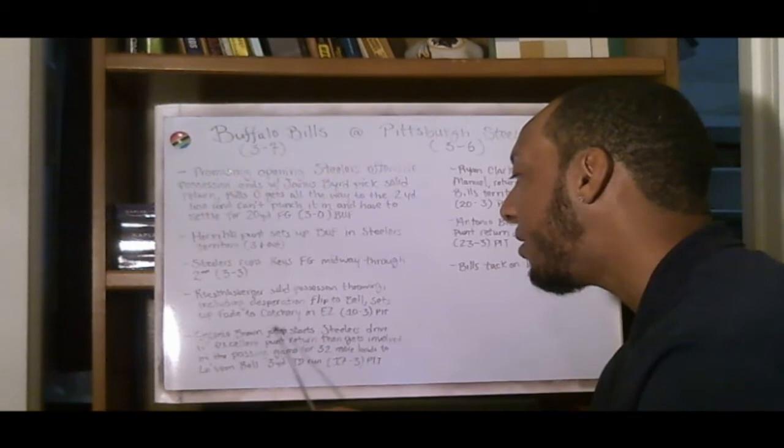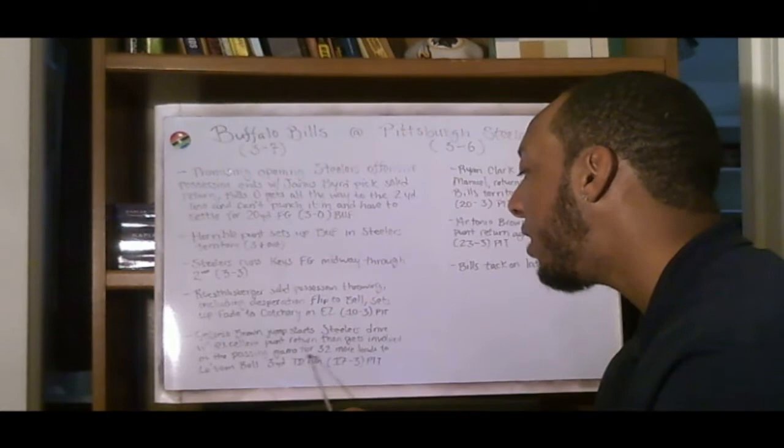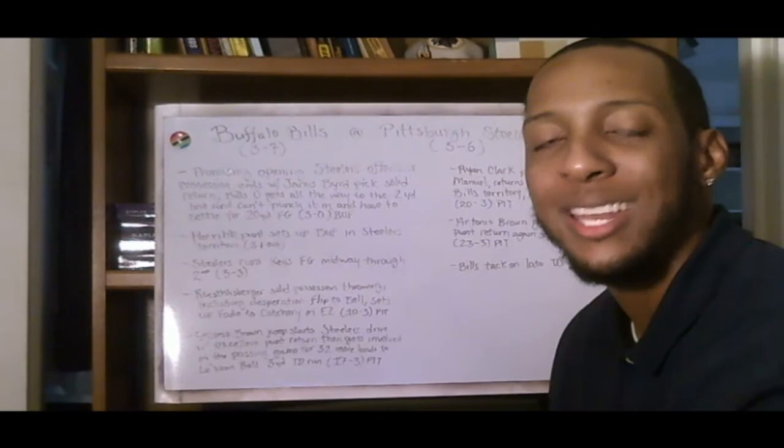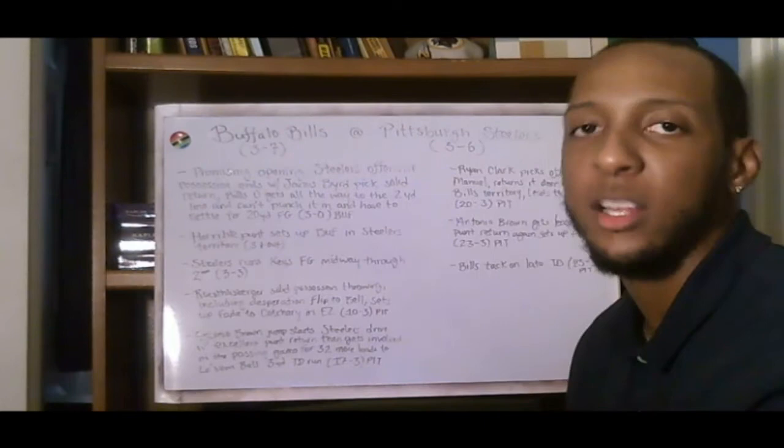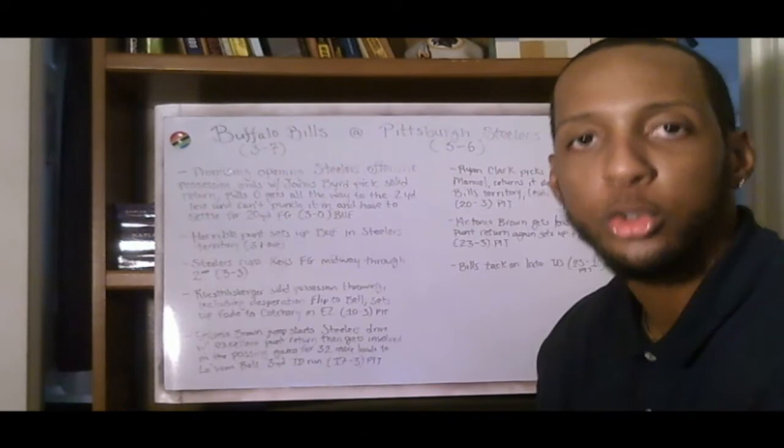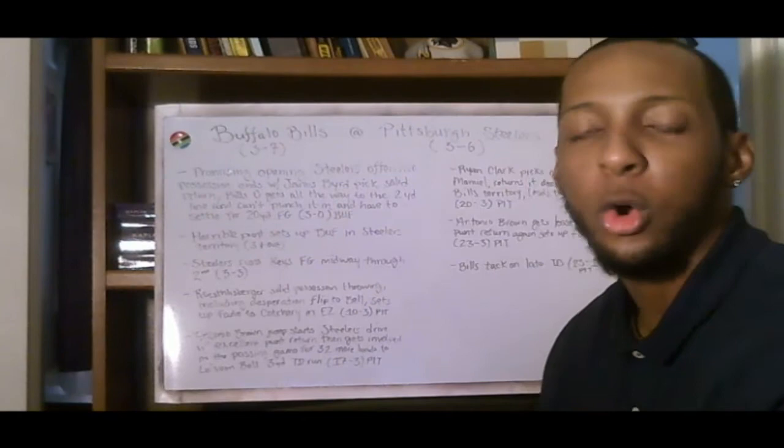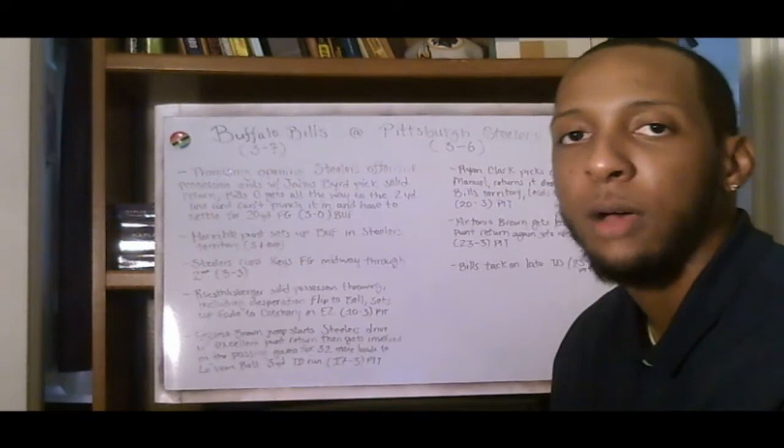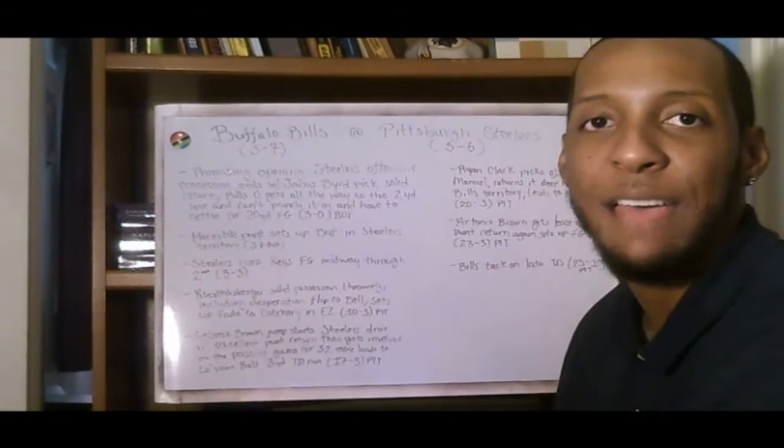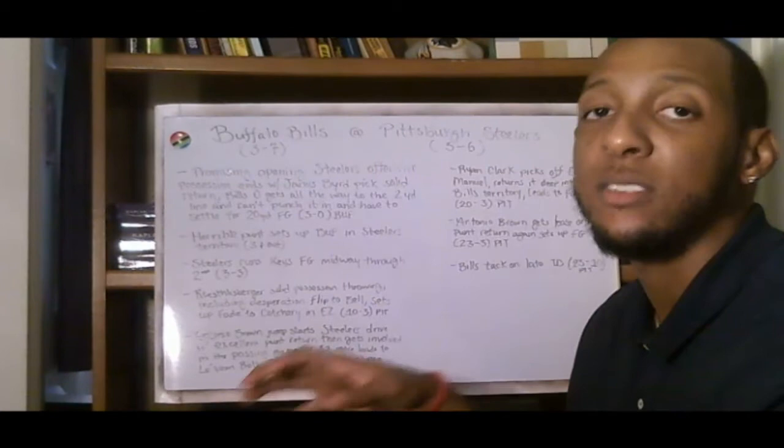Antonio Brown jump-started Steelers' drive with an excellent punt return, then gets involved in the passing game for 32 more, leads to a Le'Veon Bell 3-yard touchdown run. 17-3. At this point, the Steelers, they've won this football game. The Bills aren't going to do anything offensively, aren't going to challenge the Steelers in this game. Unless the Steelers, which they've done quite a bit this season, get in their own way, step on their own toes, shoot themselves in the foot. Unless they turn it over, they have some kind of blunder on special teams, or they give up some kind of return for a touchdown. Unless they do something of that nature, if the Bills have to drive 11 plays, 80 yards for a touchdown, they're not going to do it. The Steelers have this game well in hand. If the Steelers can just play good defense, not turn it over, this game is theirs for the taking.